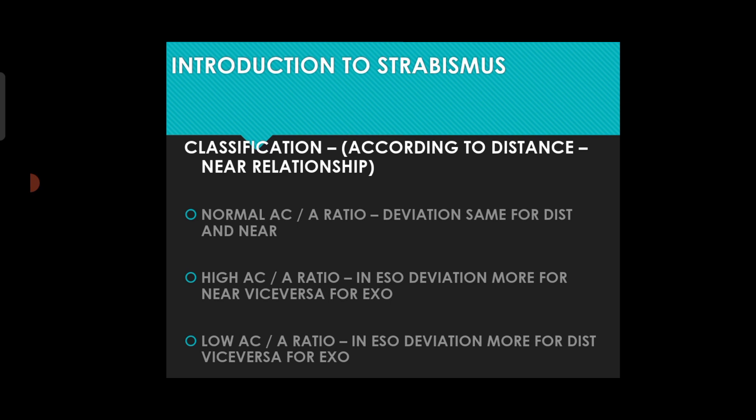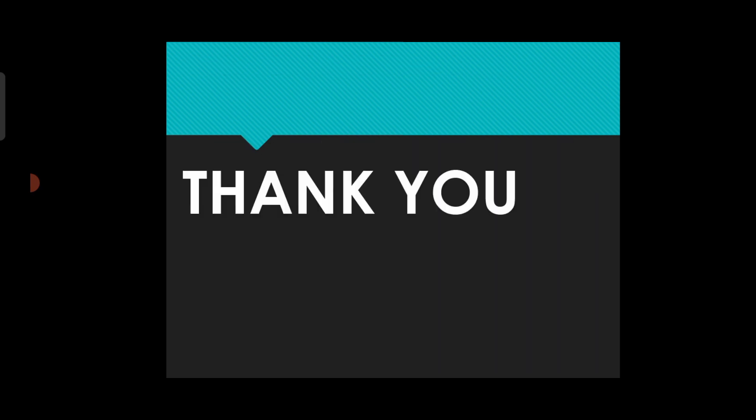Classification according to near-distance relationship uses the AC/A ratio. Normal AC/A ratio means deviation is the same for distance and near. High AC/A ratio means esodевiation is more for near, and vice versa for exo. Low AC/A ratio means esodевiation is more for distance, and vice versa for exo.